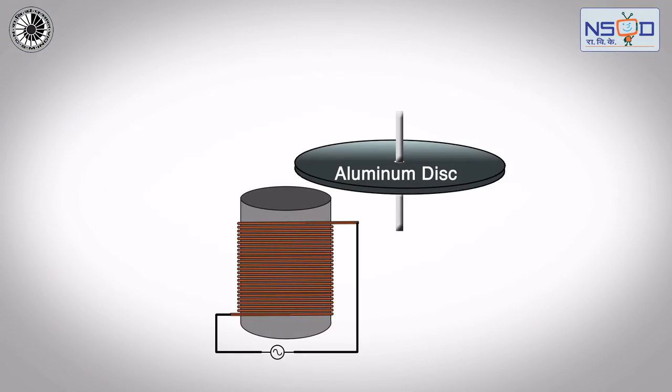A strong electromagnet is placed below the circular aluminum disc which produces symmetrical eddy currents in the disc. At extreme positions, the aluminum sheet below the disc partially covers the electromagnet.